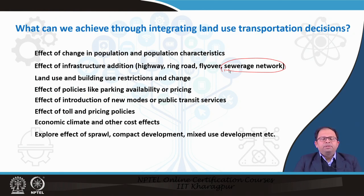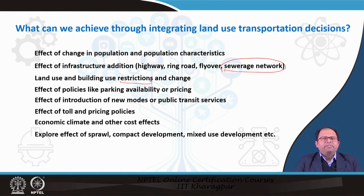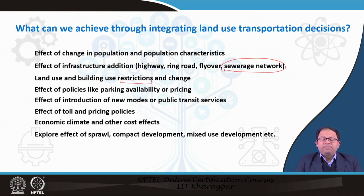Similarly, land use and building use restrictions and changes — for example, FAR restriction or density restrictions — have cascading effects. If I restrict the FAR to a certain value in a particular area, there is a certain effect. When we are trying to achieve compact development or transit-oriented development of certain zones in the city, we can increase the FAR of those particular areas, and we will see a resulting cascading change in both land use, transportation, and many other systems which also affect each other.